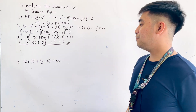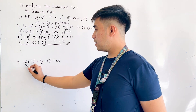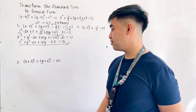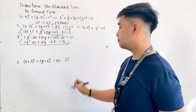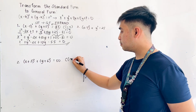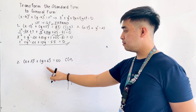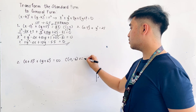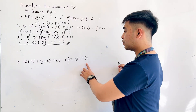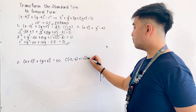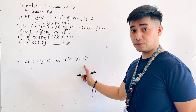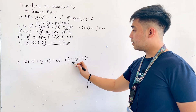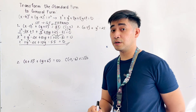For the second example, we are given (x plus 3) squared plus (y plus 6) squared equals 50. Let us identify the center: since the term is x plus 3, the center x-coordinate is negative three; since it is y plus 6, the center y-coordinate is negative six. The radius equals the square root of fifty. So the center is at (negative 3, negative 6) and the radius is the square root of fifty units.